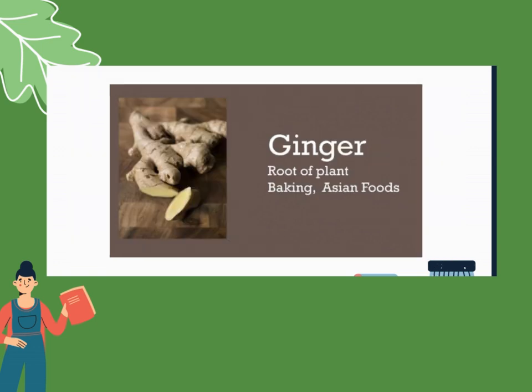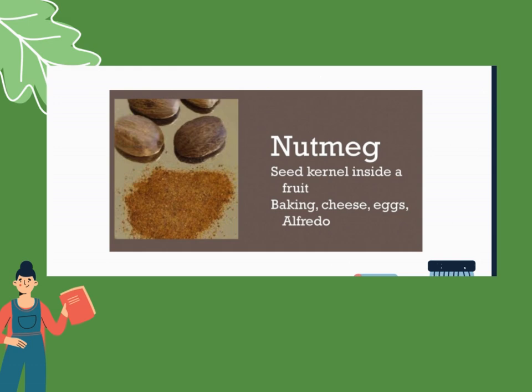Next, ginger or luya. It is a root — specifically the rhizomes of the plant. It's used for baking and is also common in Asian dishes. Next, nutmeg — it is a seed kernel inside a fruit. You can use this for baking, cheese, eggs, and alfredo dishes.